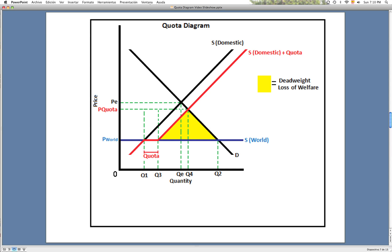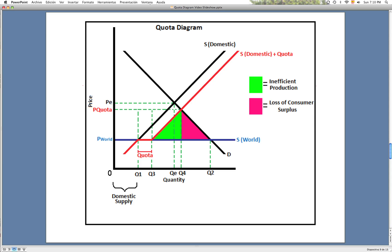This creates the yellow triangle, which goes from Q3 to Q2. This shows the amount of deadweight loss of welfare.